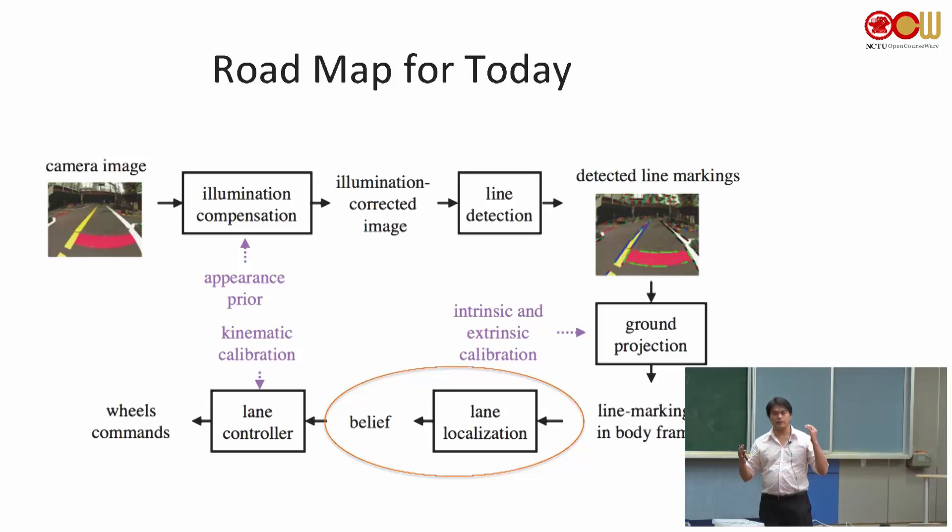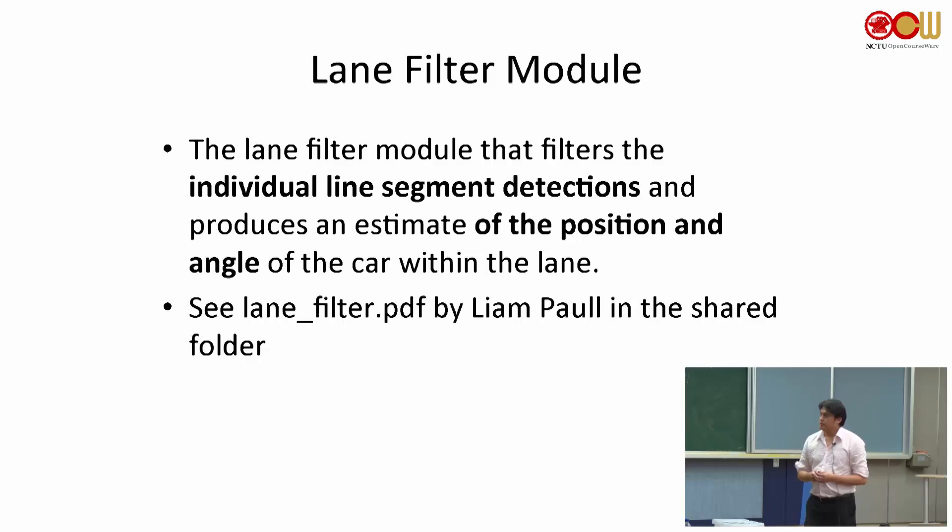So essentially that's what Daniel just talked about. We just see the mesh grid, you can see the front blue and the red. Essentially it's a two-dimensional array. And this module, the lane filter, tries to filter individual line segments and then produce the estimation of the position and angle of the car. We will see what exactly the position and angle means in a second.